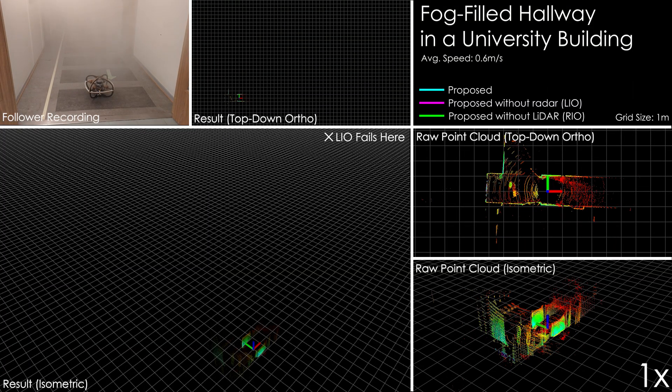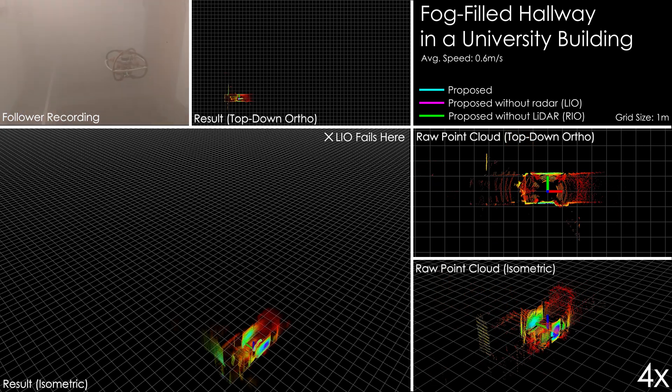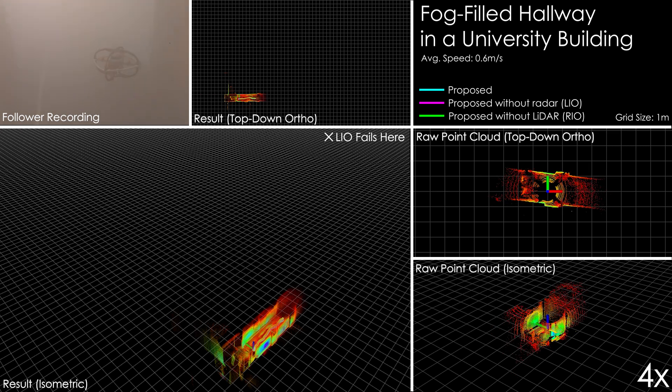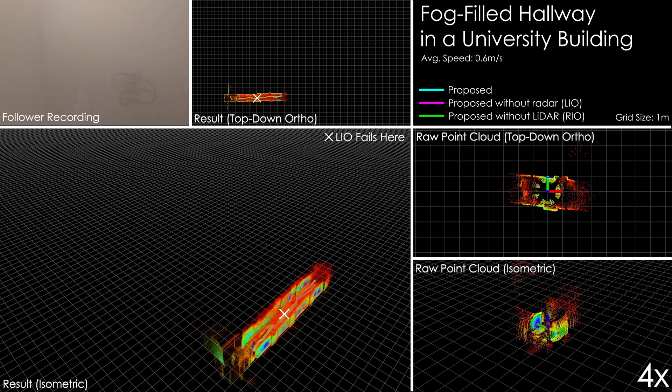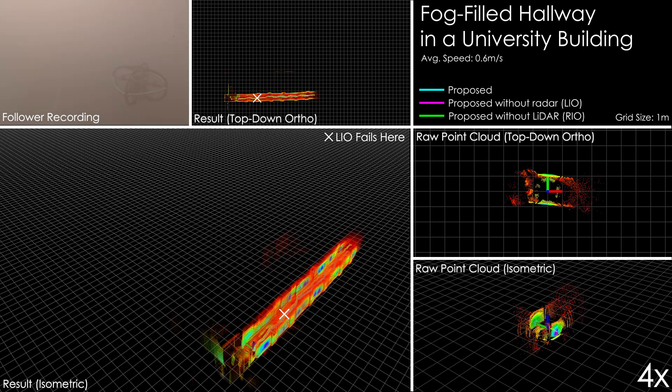Here we present a flight in a university corridor environment which has been filled with high-density fog. This functions as an obscurant which heavily reduces the quality of the LiDAR measurement. This degradation is visible in the lower right corner in the raw point cloud. Note the stark differences between the point cloud measurements before and after entering the fog.